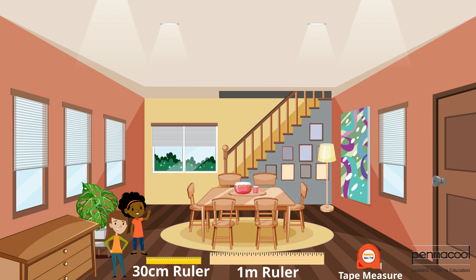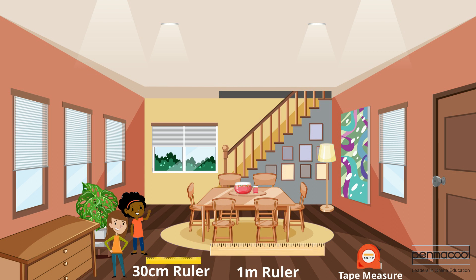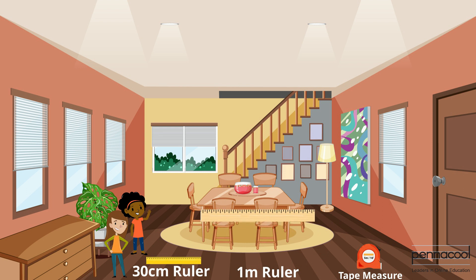They proceed to measure the length and width of a desk. Lillian attempts to use the 30 centimeter ruler, but it turns out to be too small to measure the dimensions of the table. They then use the meter rule and obtain the length and width of the desk. The length measured was 85 centimeters, while the width was 60 centimeters — both too long for the smaller ruler.